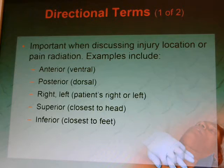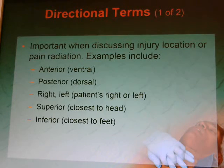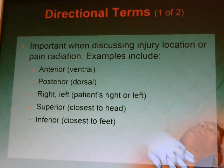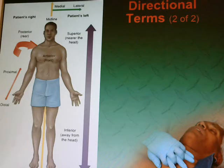Anterior is your ventral side — your front. Posterior is your dorsal side — like a fish has a dorsal fin on its back. Right and left: remember, my right is my patient's left. Superior means closest to the head, inferior means closest to the feet. For example, the superior vena cava brings blood from the head into the right atrium; the inferior vena cava brings blood from the feet, legs, and abdomen into the right atrium. Proximal and distal refer to near and far points — midline and lateral, front and back.